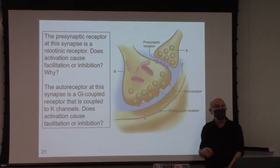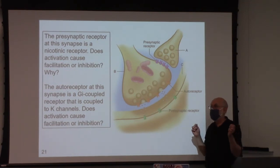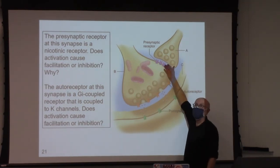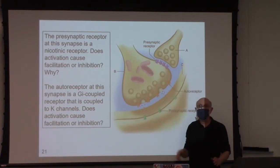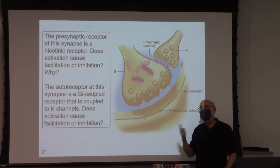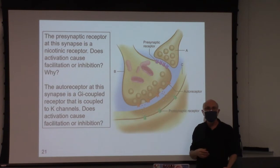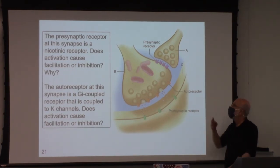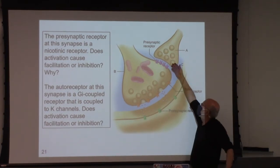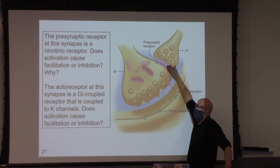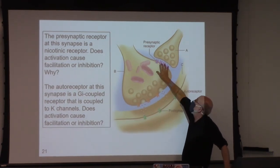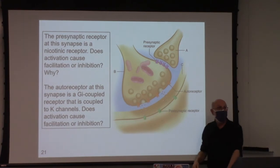You probably don't have time to write that all down, but you should be thinking: we told the facilitation story and the inhibition story — one slow, one fast. Questions about presynaptic facilitation or inhibition, depending on this receptor and this neurotransmitter?